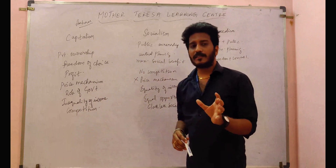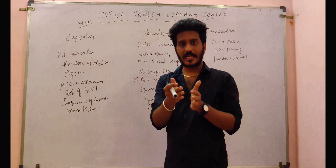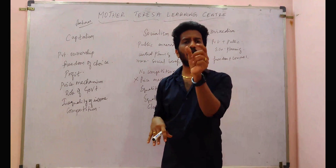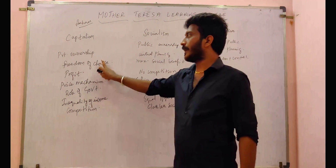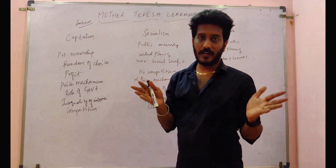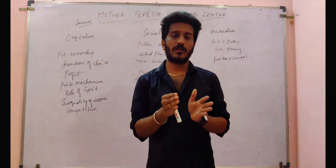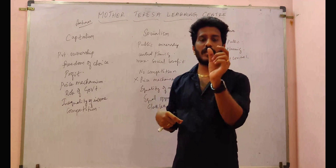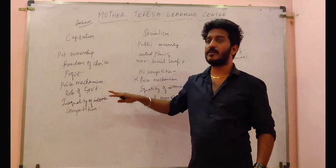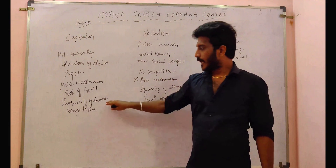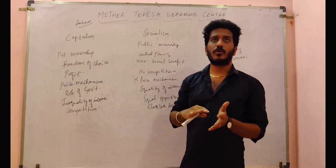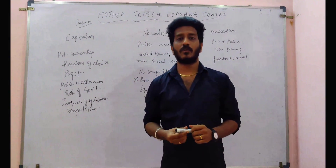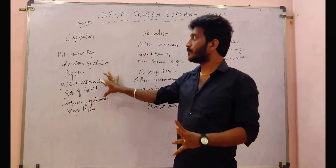Talking about capitalism — private ownership is important. All players are private. If you want to start an airport, you can start. If you want to start a bus service, you can start. Everything is under private control. Government role is very low. Profit is the most important motive. You have wide freedom in capitalism. There is no price mechanism. Government role is very minimum. Tax is very low. Income inequality is high — rich become richer, poor become poorer. That is capitalism. And competition is very heavy. These are the features of capitalism.